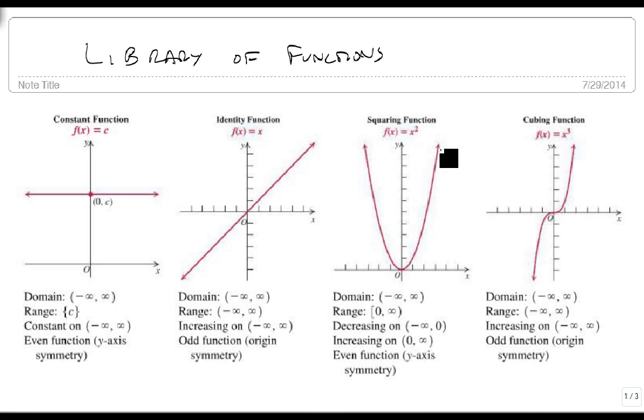The squaring function, f of x equals x squared, has a domain from minus infinity to infinity and a range of zero to infinity. We have not only a relative minimum but an absolute minimum. It's the lowest point on the graph. It decreases from the left and increases on the right, and it's an even function.